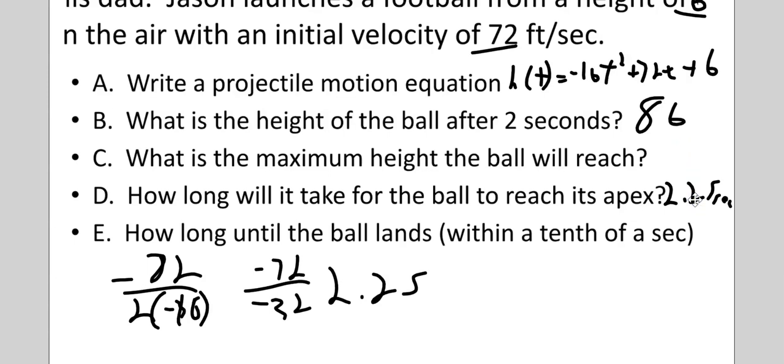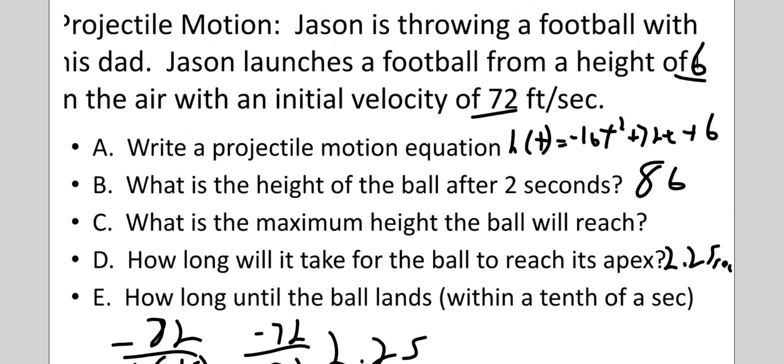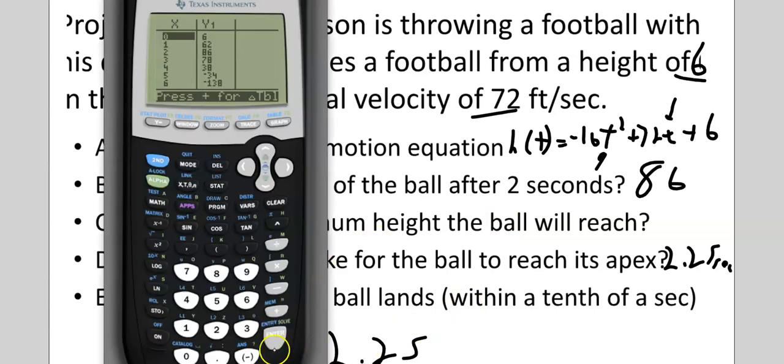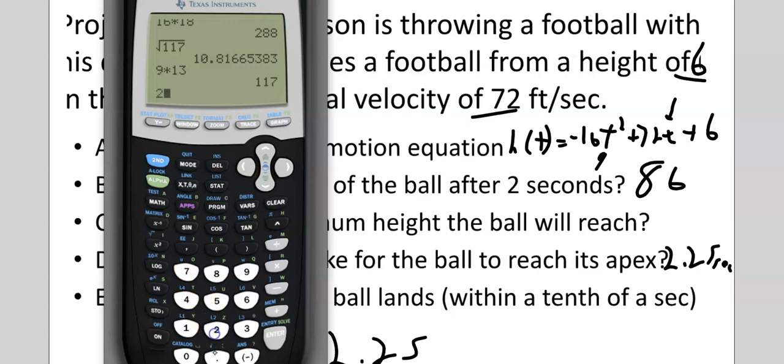Now, we actually have to plug that in to find out what it's going to be. So, we need to plug 2.25 in right here and right here and crunch the numbers. So, a little bit more work. That's okay. So, I'm going to take 2.25, I'm going to square it, and then, we'll multiply it by negative 16. That takes care of the first term. Now, I'm going to do 72 times 2.25. I'm going to add that to 81 or negative 81. So, minus 81 gives me 81 plus 6 is 87. So, 87 feet.